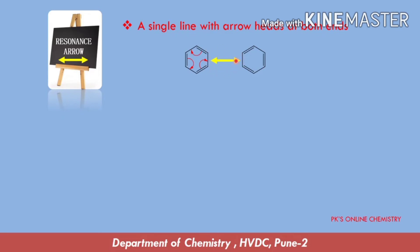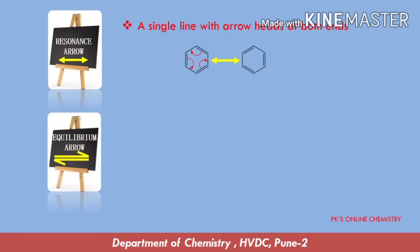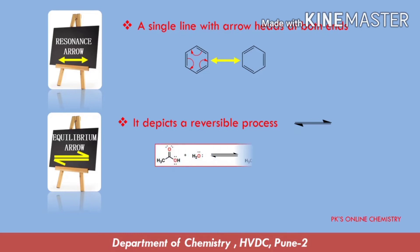The second one is the equilibrium arrow. The equilibrium arrow has two lines pointing in opposite directions. It depicts a reversible process — that is, two structures are interconvertible, or the reaction goes reversibly between the starting material and the product. For example, this is a simple dissociation reaction of an acid in aqueous medium. After dissociation, we get the corresponding conjugate base and conjugate acid, indicating that reactants can be converted into products, or these products can be converted back into the reactants.